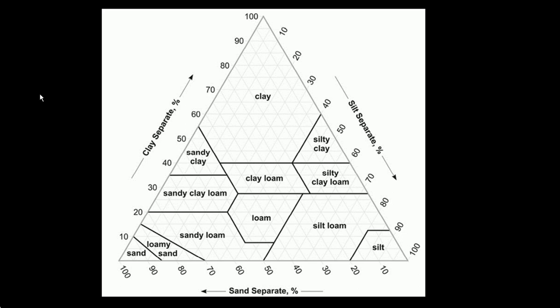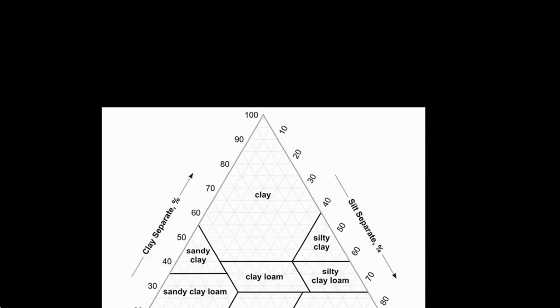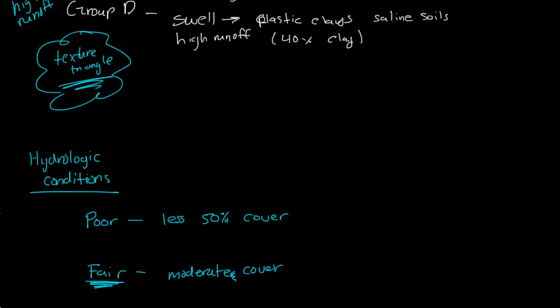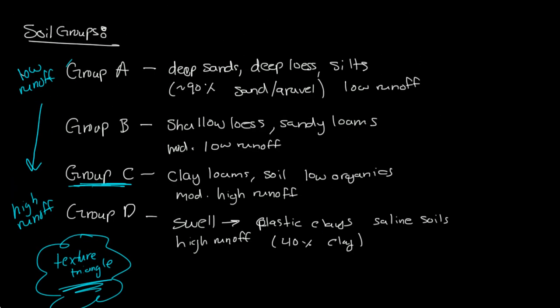This is the USDA Texture Triangle, or the Texture Classification Triangle, developed by the USDA, the United States Department of Agriculture. This is a triangle that we'll use to classify different types of soils that will later give us soil groups.